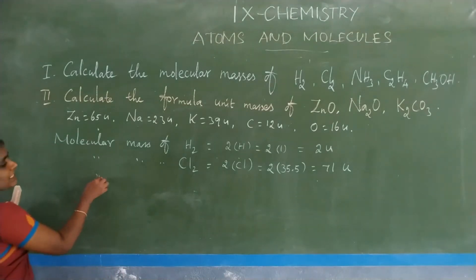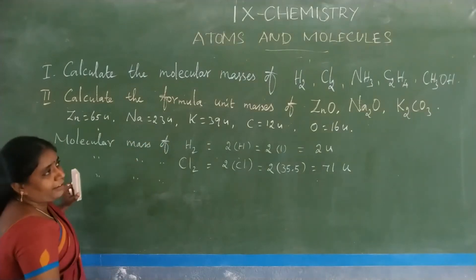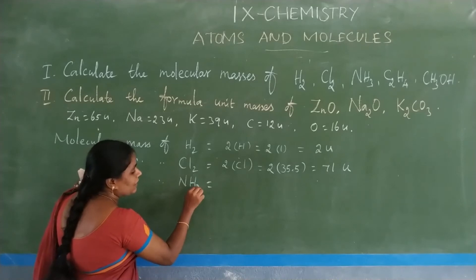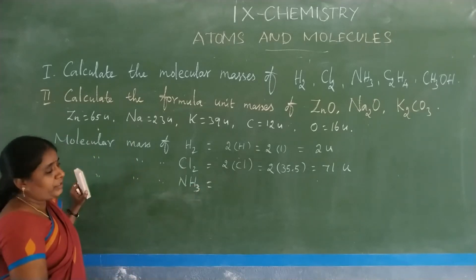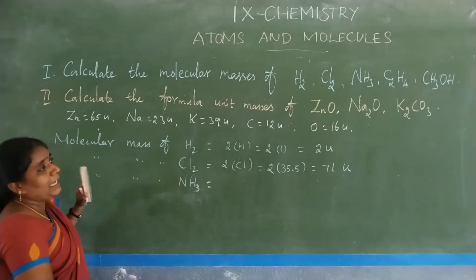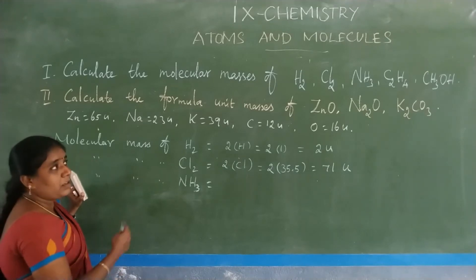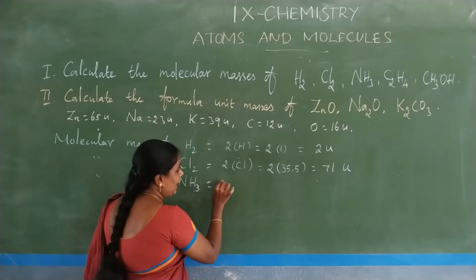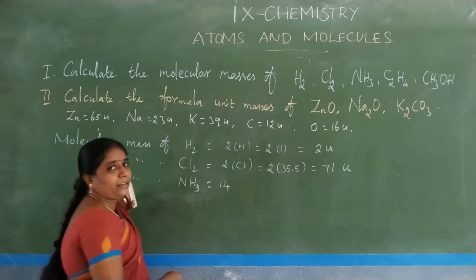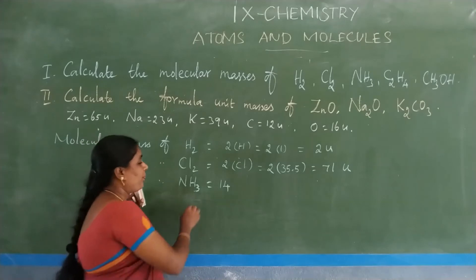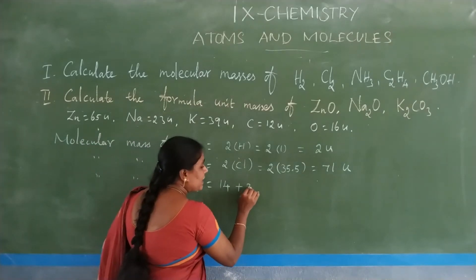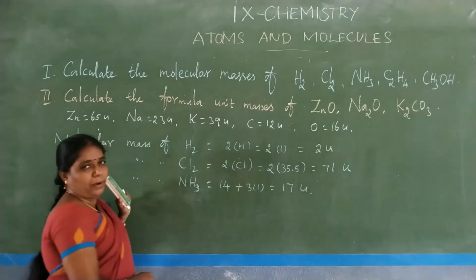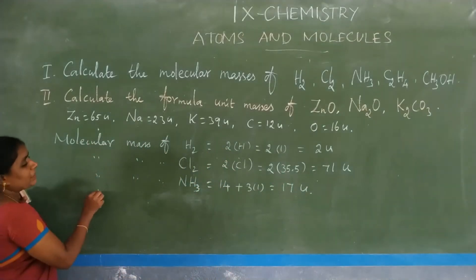Next, molecular mass of NH3 (ammonia). In ammonia, there is 1 nitrogen with atomic mass 14, and 3 hydrogen atoms: 3 × 1 = 3. So total molecular mass = 14 + 3 = 17 unified mass.